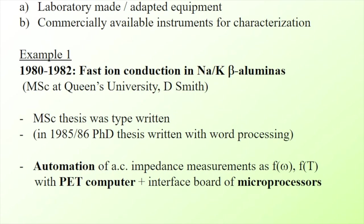How about the reverse relation — the effect of computing on ceramics? I'm going to start with instrumentation for ceramic science. One can consider the laboratory-made equipment, or we can also consider commercially available instruments. As a first example, I'm going to talk about some work I did 40 years ago on fast iron conduction in beta alumina — this was my MSc thesis at Queen's University. One of my important tasks in this work was the automation of AC impedance measurements for beta alumina with a PET computer and an interface board of microprocessors.